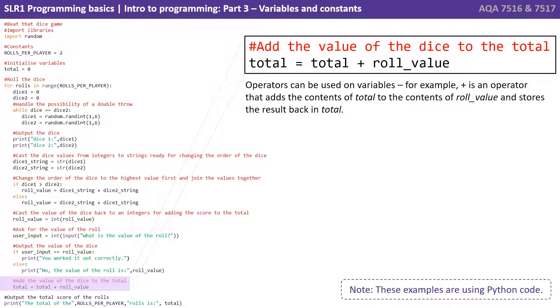Operators can be used on variables. For example, plus is an operator that adds the contents of total in this example to the contents of roll_value and stores the results in the variable total. So we've got two variables being used. We take the contents of total, add it to the contents of roll_value, perform the operation, and then reassign the resulting calculation over the top of total.